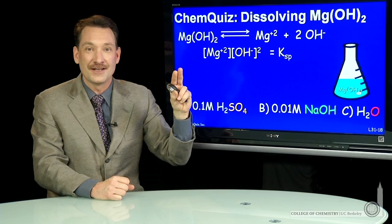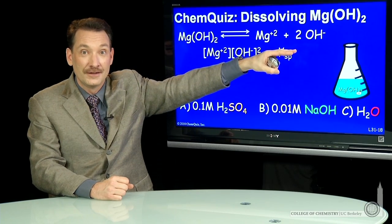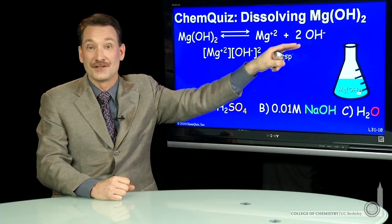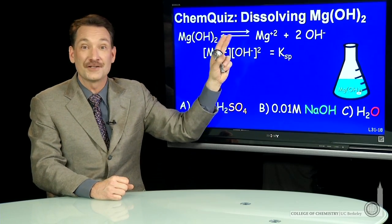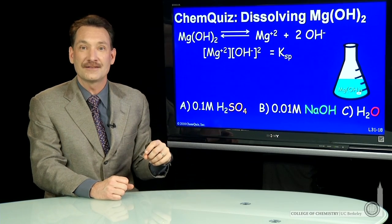If I lower that concentration, the reaction will shift. Le Chatelier's principle: shift towards the products to raise these concentrations. So the magnesium ion concentration will go up, and you'll dissolve more solid by adding some strong acid.